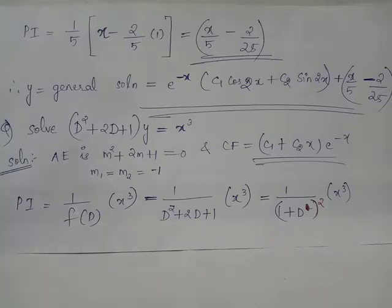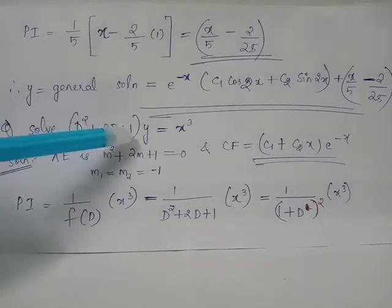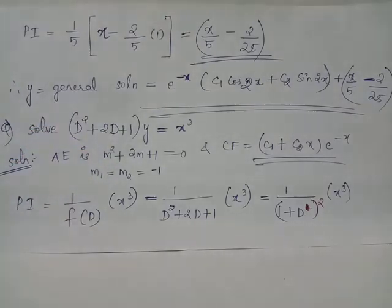Solve the differential equation (D² + 2D + 1) acting on y equals x³. The auxiliary equation is m² + 2m + 1 = 0, which has repeated roots m₁ equals m₂ equals minus 1.